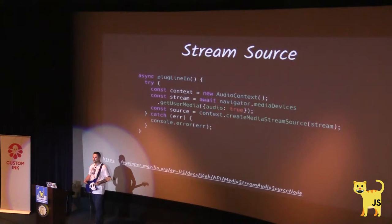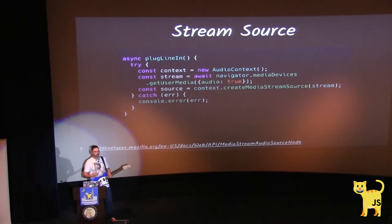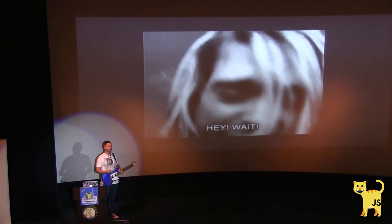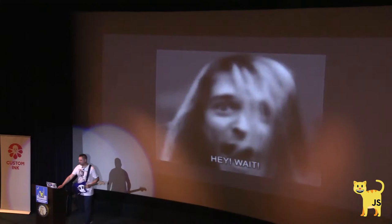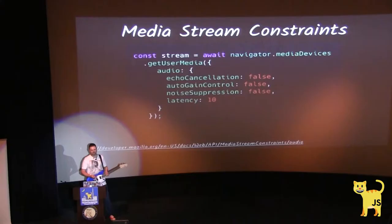Then you get the media device and request audio from the user. Using the context, you create a media stream source, which is your guitar or another instrument line-in or microphone. But it's not working very well with instruments by default, because browsers apply a bunch of modifications to audio from a microphone — noise gate cancellation, echo, noise suppression, adding some latency, and so on. To avoid that, you need to switch off all these features using an options object, and you get a clean instrument sound.